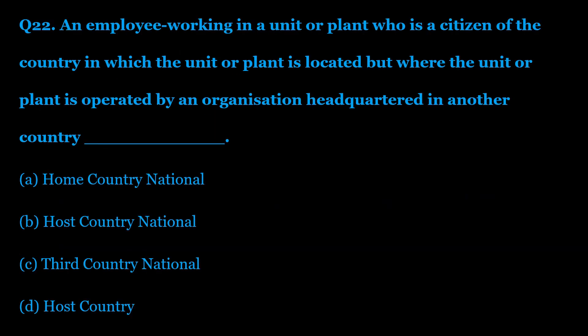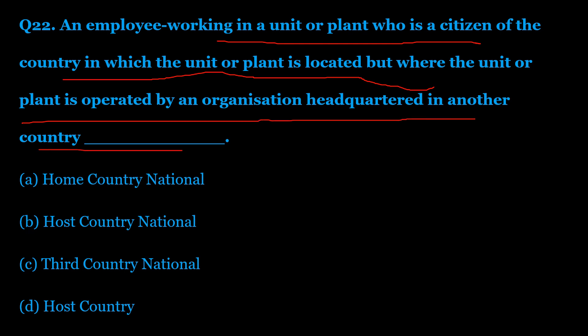Question number 22: An employee working in a unit or plant who is a citizen of the country in which the unit or plant is located, but where the unit or plant is operated by an organization headquartered in another country — what do we call this? Option A: home country national. Option B: host country national. Option C: third country national. Option D: host country. The correct answer is Option B — host country national.